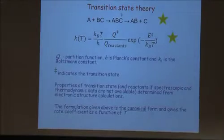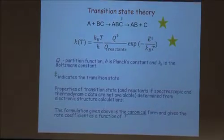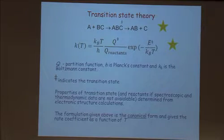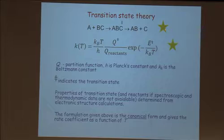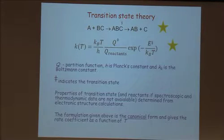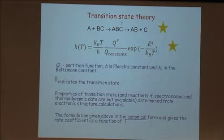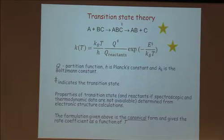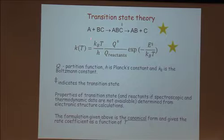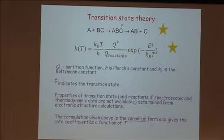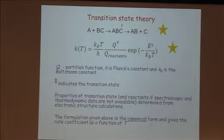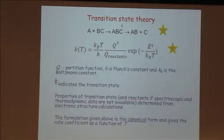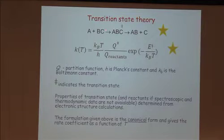Now let's have a look at this first slide on transition state theory. One correction: the dagger should be on ABC, not AB. This is a reaction of atom A coming into diatomic molecule BC, going on to form products AB plus C — so we transfer atom B from C to A. Or it could be a more complicated reaction involving larger fragments.